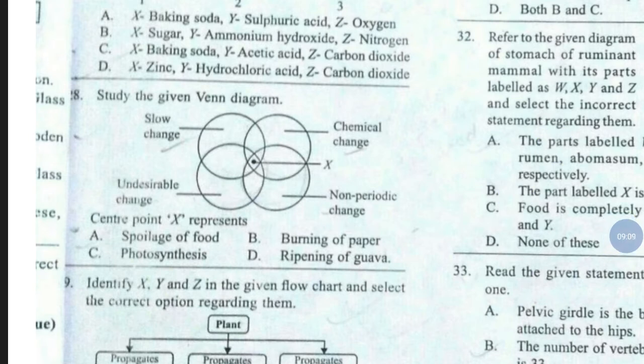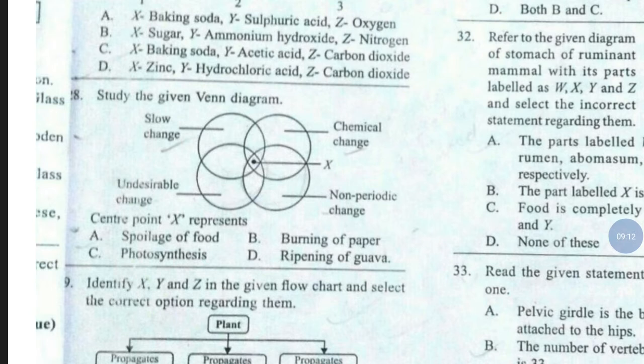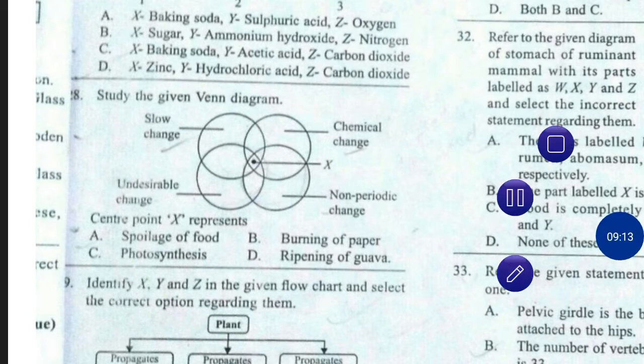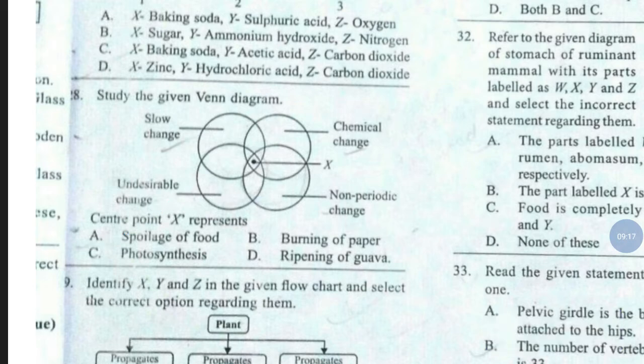Question number 28. Study the given Venn diagram. Centre point X represents — the correct answer is option number A — spoilers of food.